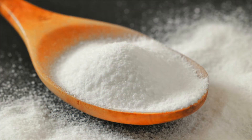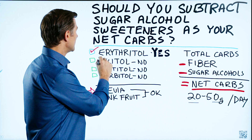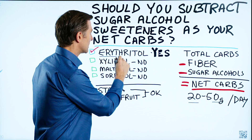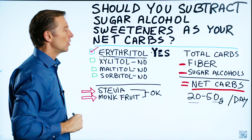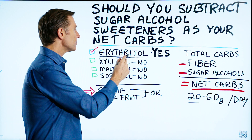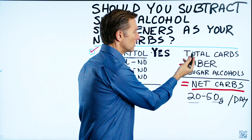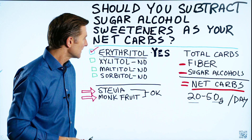I disagree with that general approach. Out of all the sugar alcohols, only one is zero on the glycemic index, and that's erythritol. So yes, if you have erythritol as your sweetener, definitely deduct it from the total carbs to get your net carbs.